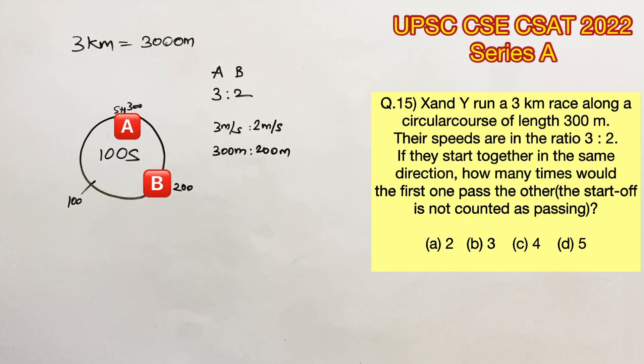The next 100 seconds, A would have completed one more round and reached the start point, which is 600 meters. But B would be at 400 meters, right here.